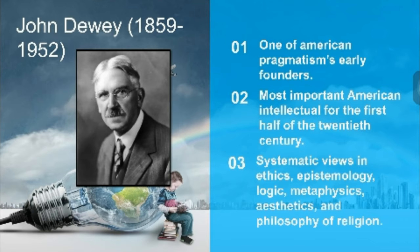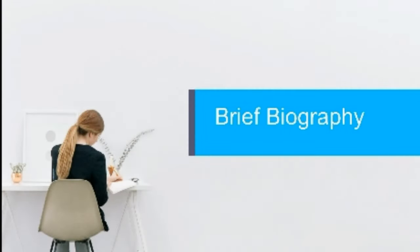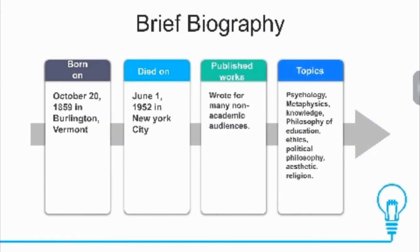Let's proceed to our next philosopher: John Dewey, one of American pragmatism's early founders, along with William James and Charles Sanders Peirce. He is considered the most important American intellectual for the first half of the 20th century because of his systematic views in ethics, epistemology, logic, metaphysics, aesthetics, and philosophy of religion. He was born on October 20, 1859, in Burlington, Vermont, and died in June 1952 in New York City. He also participated in mainly non-academic activities such as educational protests. His topics included psychology, metaphysics, knowledge, philosophy of education, ethics, political philosophy, aesthetics, and religion.